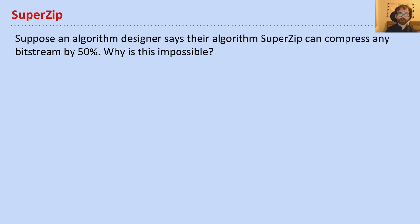Let's suppose we have an algorithm designer who says their algorithm, SuperZip, can compress any bitstream at all that you give it by 50%. Why is that impossible? Let's try and think of that. How do you know that the SuperZip designer is just plain wrong?